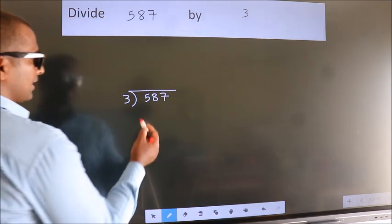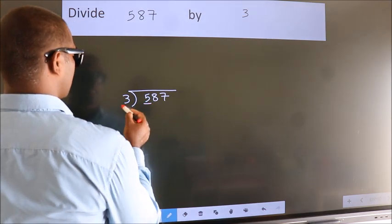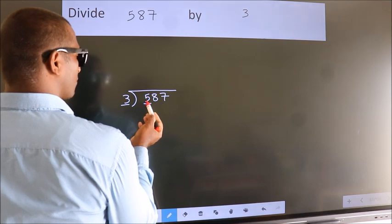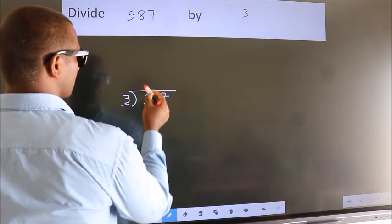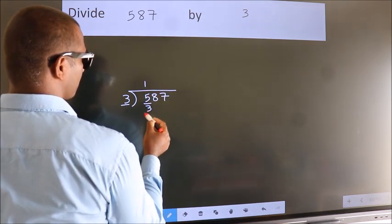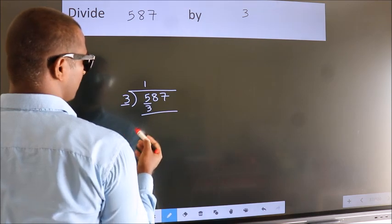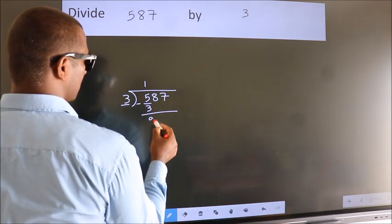Next, here we have 5, here 3. A number close to 5 in 3 table is 3 1s 3. Now we should subtract. We get 2.